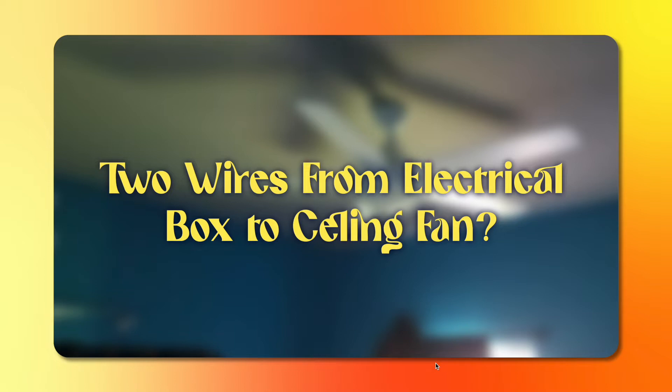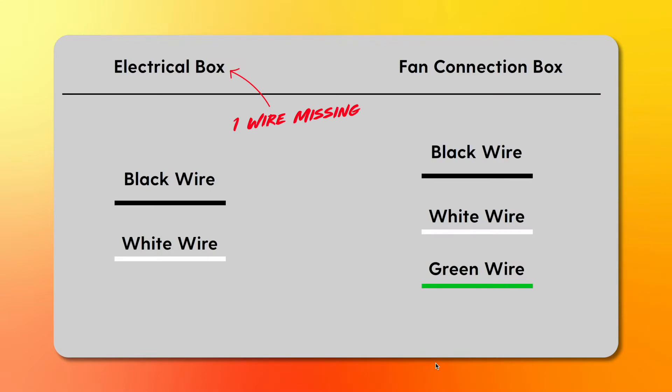A fan connection box usually has three wires or three connections you can make. One of them is the black wire, the other is the white wire, and the third one is the green wire. In some cases, the green wire might have some yellow strips on it.